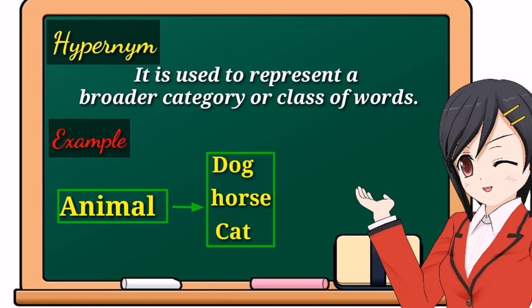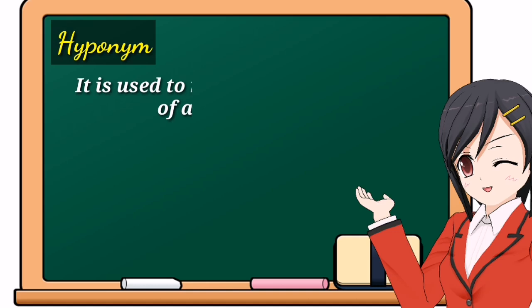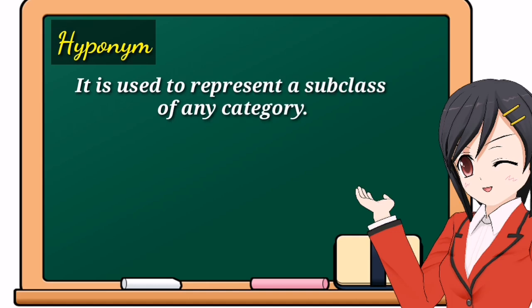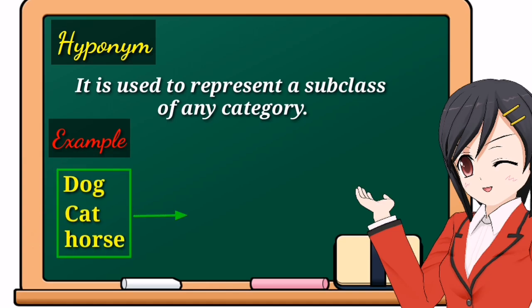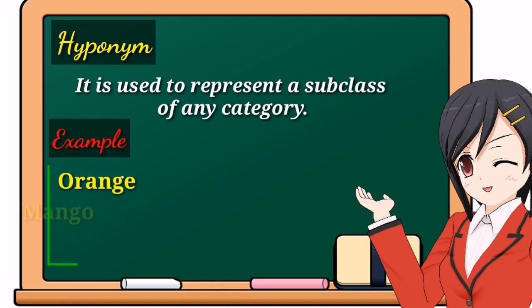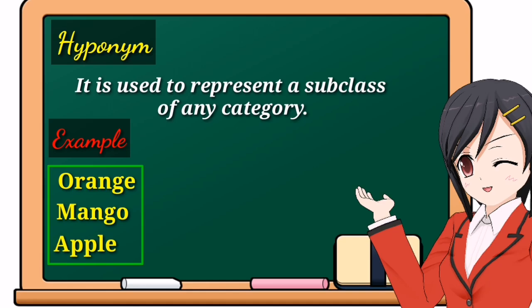Now let's discuss hyponym. Hyponym is used to represent a subcategory of any category or class. For example, dog, cat, and horse are the hyponyms of the term 'animal,' because they represent subcategories of the hypernym 'animal.' Similarly, orange, mango, and apple are hyponyms because they are the subcategory or class of 'fruit.'